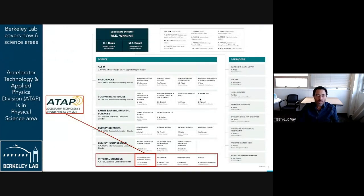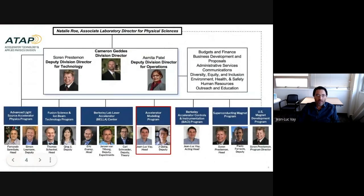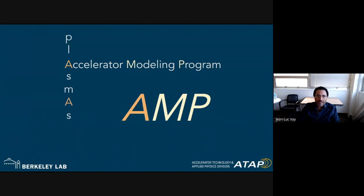The lab has grown quite a bit and now has six areas: biosciences, computing sciences, earth and environmental sciences, energy sciences, energy technologies, and physical sciences. Our division is the Accelerator Technology and Applied Division (ATAP). ATAP has a number of groups; our group is the Accelerator Modeling Program, which models particle accelerators, plasma beams, and lasers.